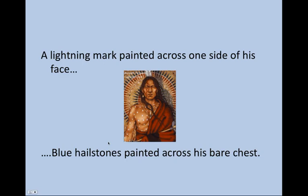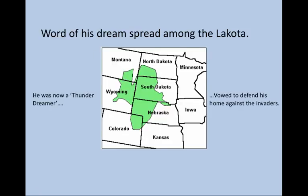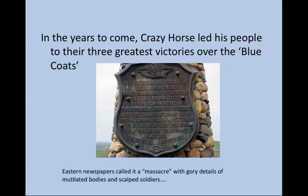This is really where the legend of Crazy Horse begins. As word of his dreams spread among the Lakota of the Dakota, Montana, Wyoming, and Nebraska territories, this thunder dreamer would inspire the Lakota people to defend themselves against the invading Bluecoats. In the years to come, Crazy Horse would lead his people to their three greatest military victories over the Bluecoats.